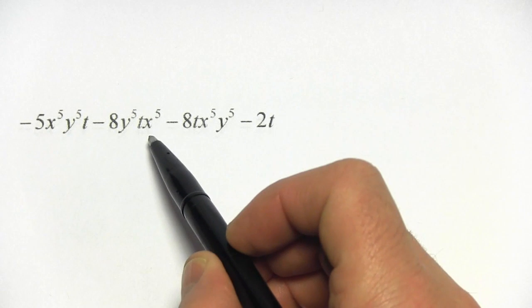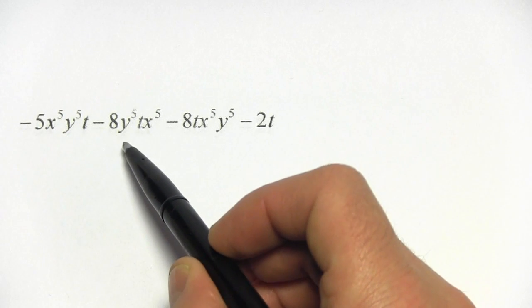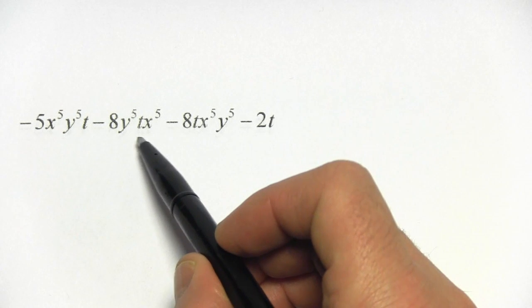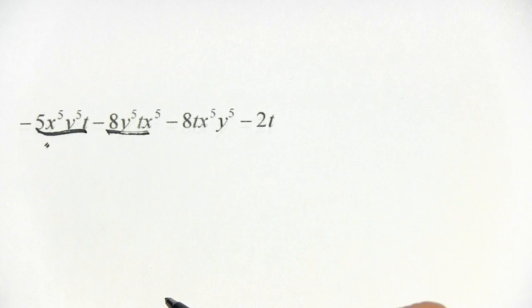This one we have y to the 5th, t, x to the 5th. Well, the x and y are both to the 5th and the t is to the 1st power. So these are actually the same. Those are like terms.